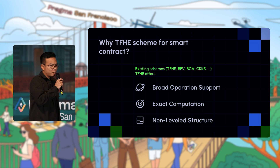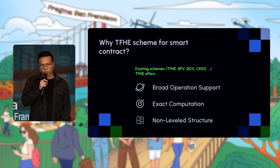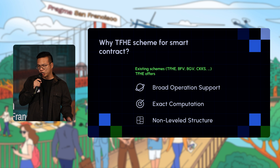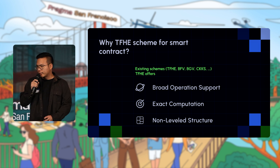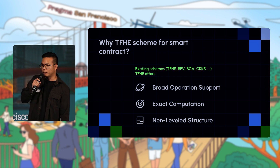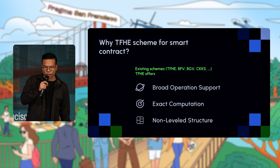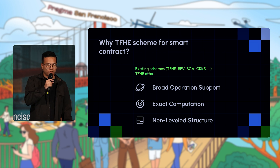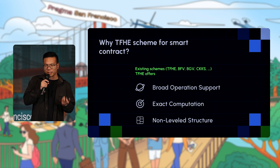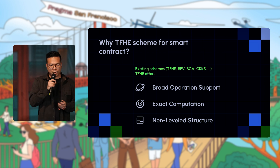There are many existing FHE schemes. The reason we chose the TFHE scheme — which stands for TFHE-rs — is because it supports a wide array of operations including divisions, multiplications, and additions. It also supports exact computations, which is critical. Other schemes are limited to approximate results, which wouldn't work for a smart contract where your balance must always be accurate.